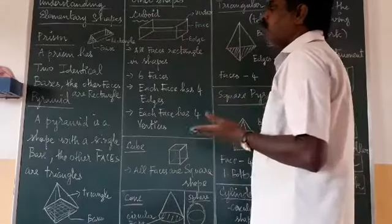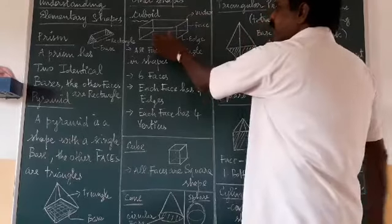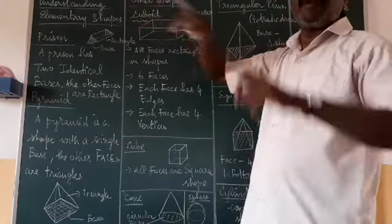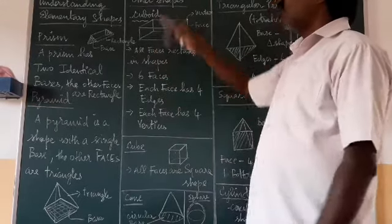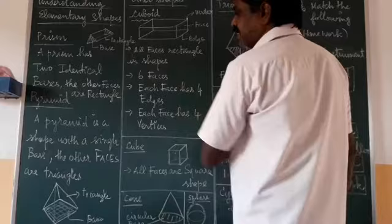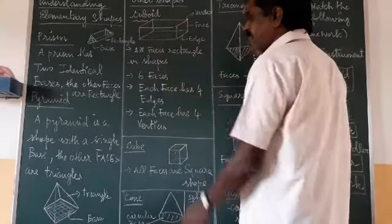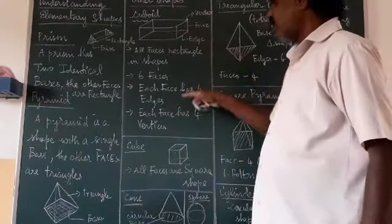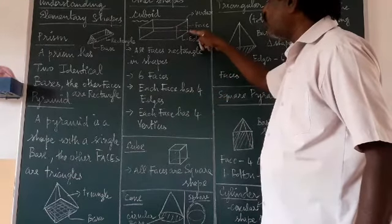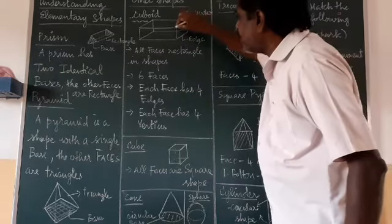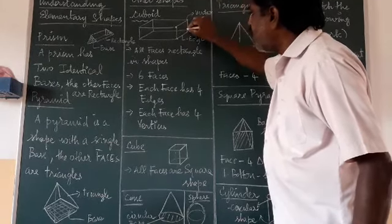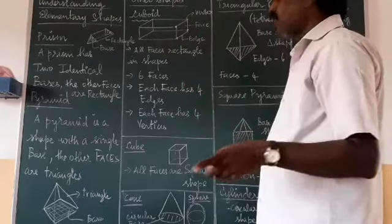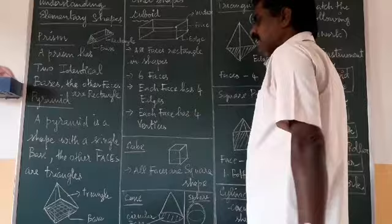The other shapes in our elementary shapes chapter include the cuboid. In a cuboid, all six faces are rectangular — top, bottom, front, back, and the two sides. A cuboid has six faces, each face has four edges, and each face has four vertices — the corner points where the lines meet.